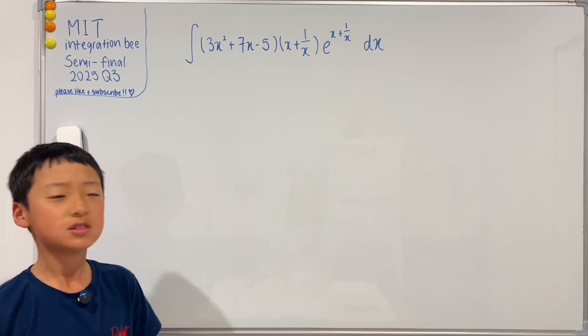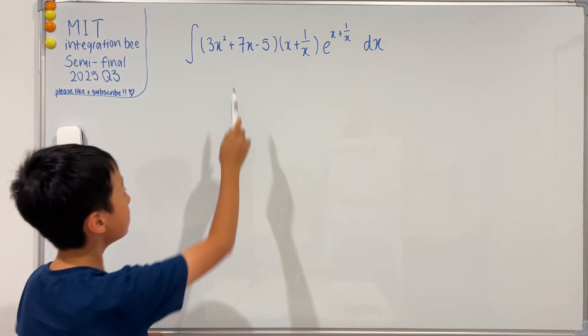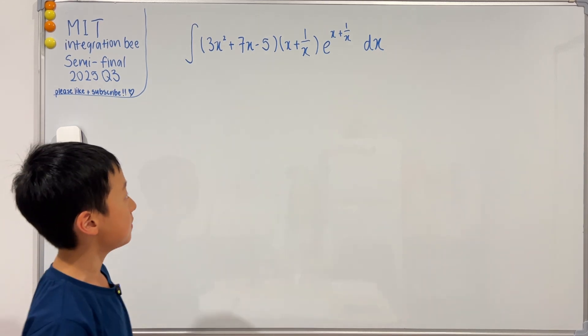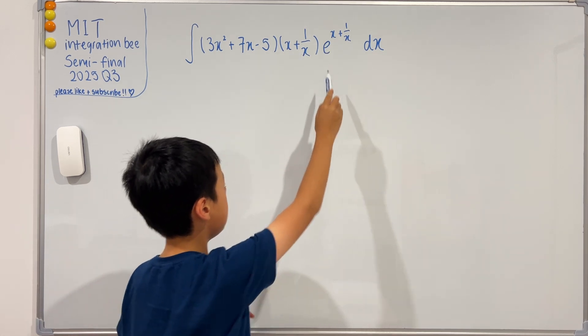Well, this question seems impossible, right? Because we see that with these terms there is no relation. But some of you guys might be thinking, well this is x plus one over x, and this is e to the x plus one over x, surely there is a connection.